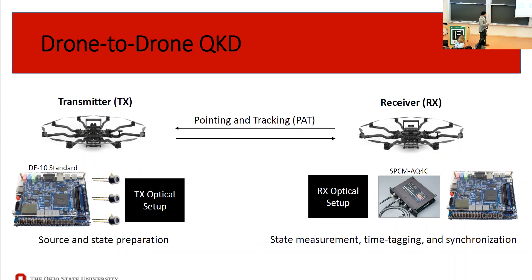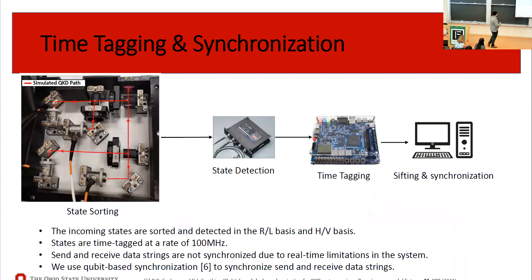On the receiver side, we have a similar optical setup that sorts incoming states to their respective bases and couples them into multi-mode fibers leading to the detector. We time-tag the detected signals using the FPGA at 100 MHz. The FPGA saves the data to an SD card, which is then transferred to a computer for sifting.